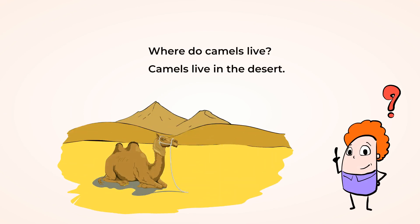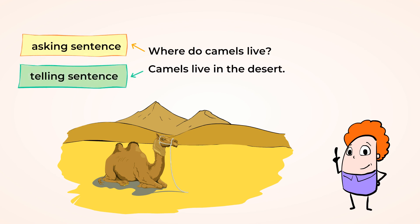Remember that a telling sentence tells us information about something. The first sentence doesn't tell us any information. It asks us for information. So it's an asking sentence. Now the second sentence tells us where camels live. So that is the telling sentence.